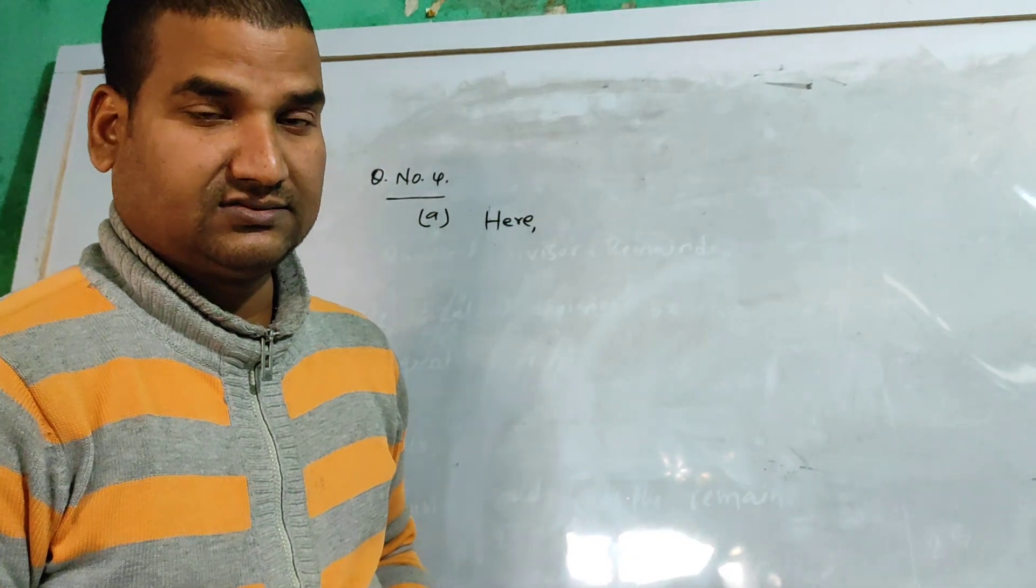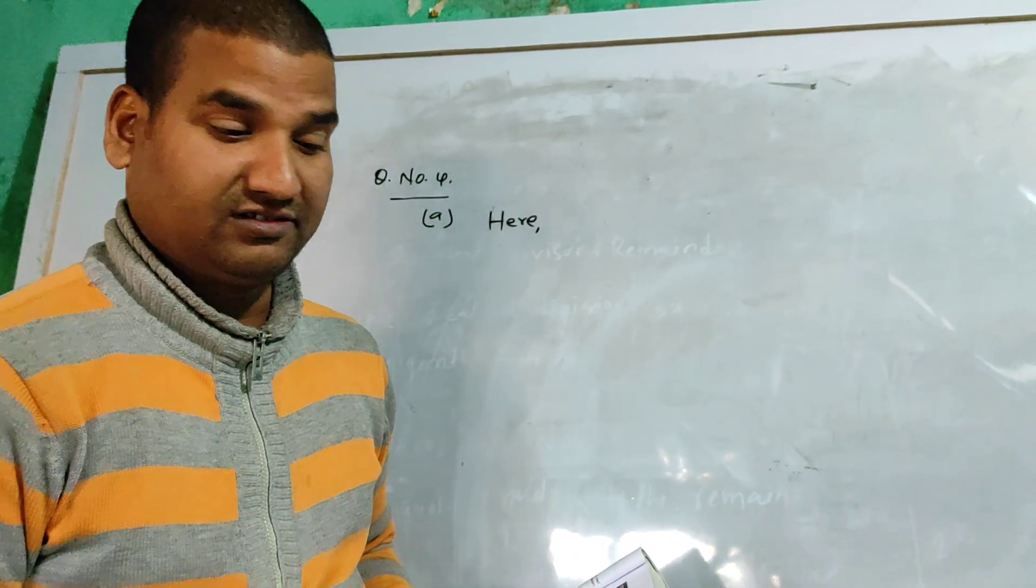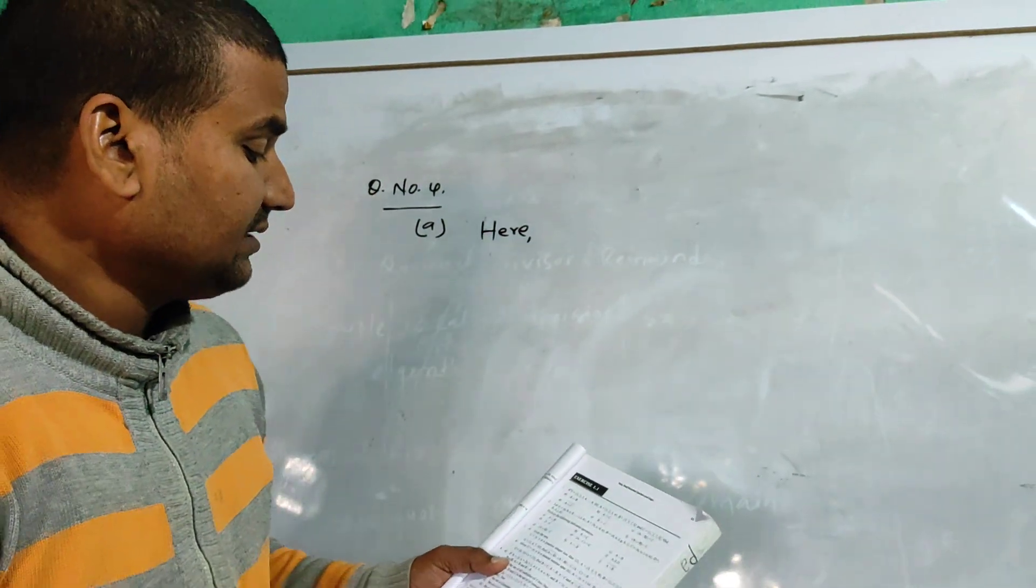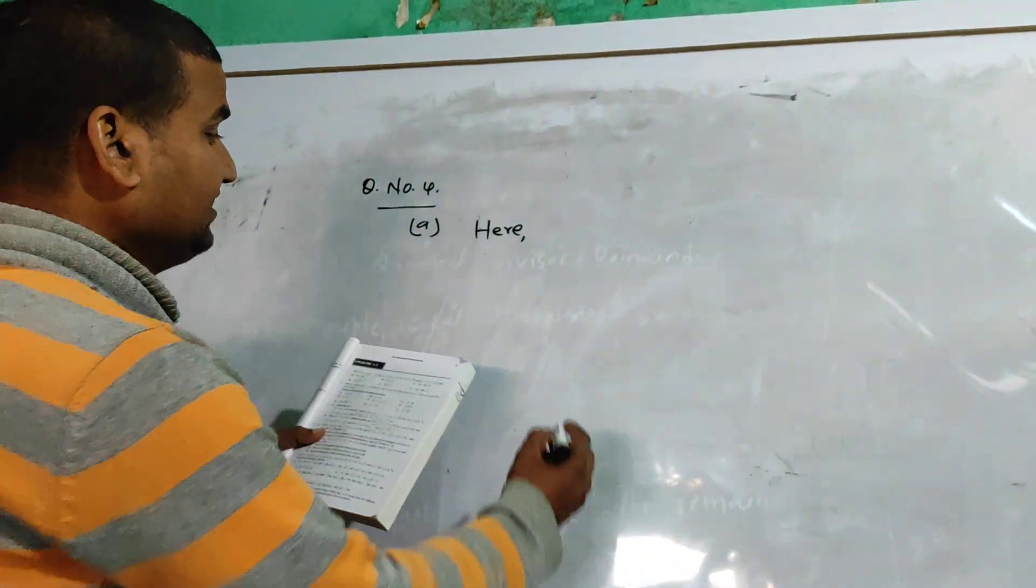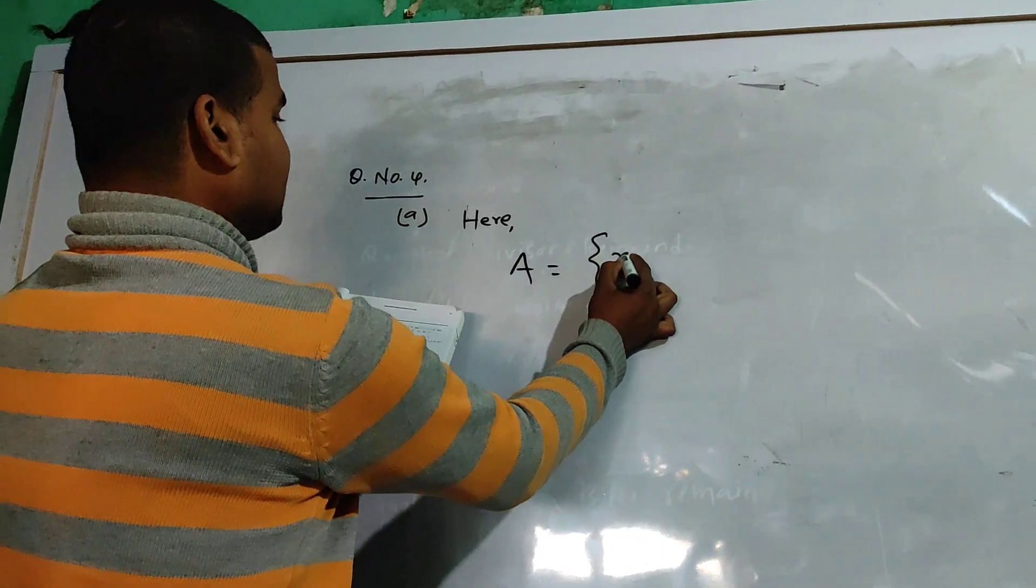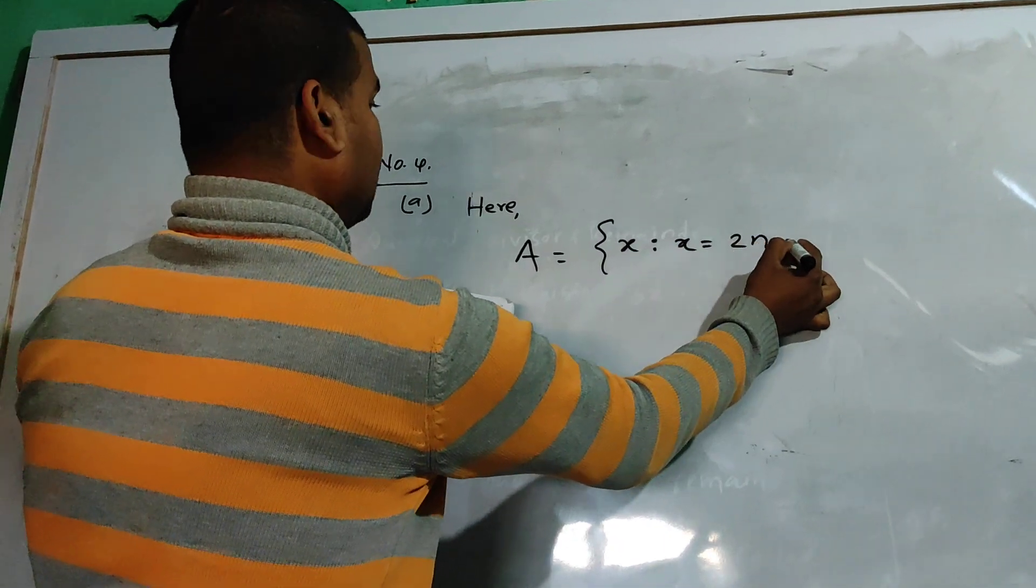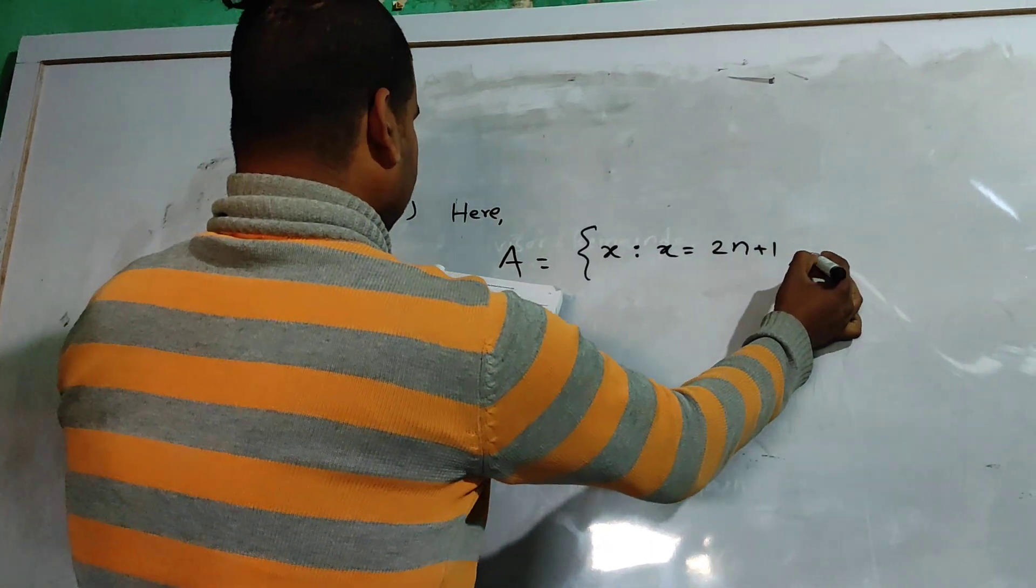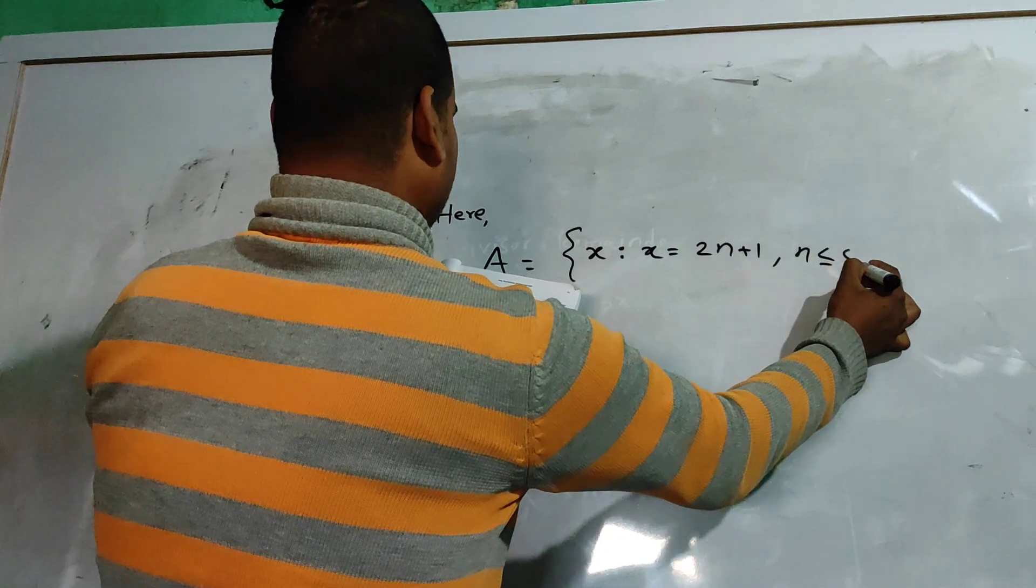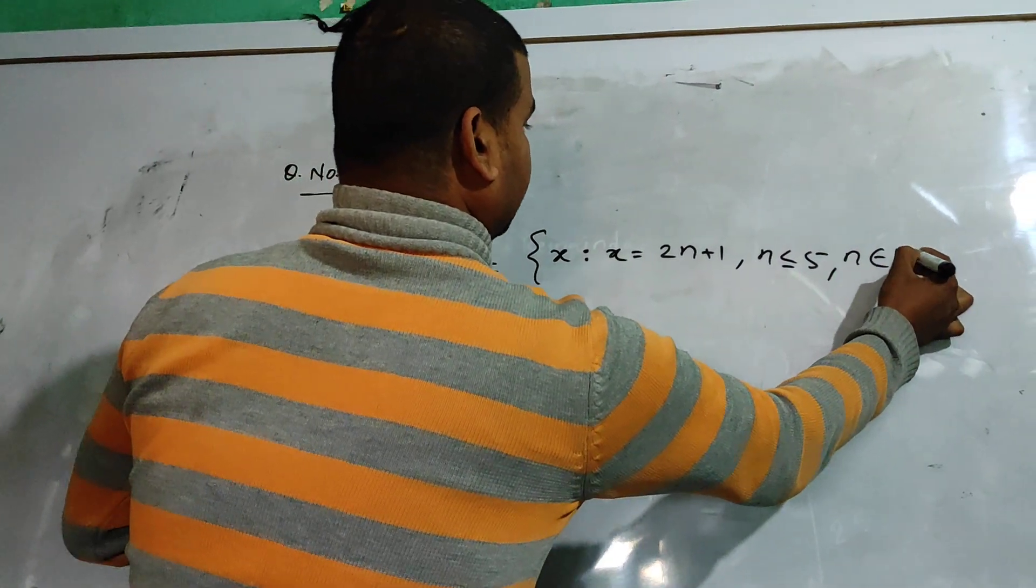We are going to do question number 4a. A is equal to the set where x is equal to 2n plus 1, n is less than or equal to 5, and n is a natural number.